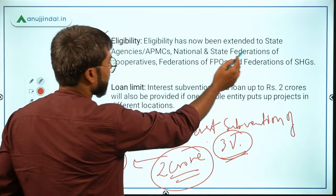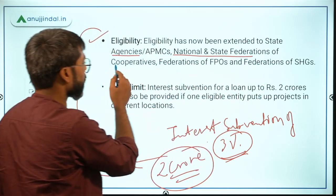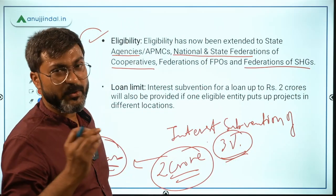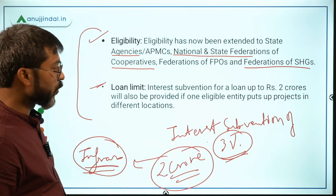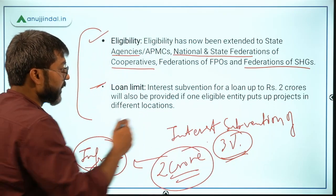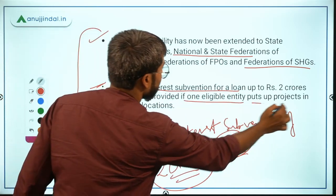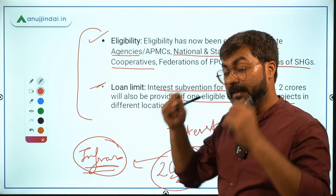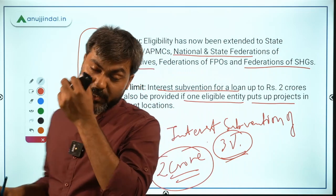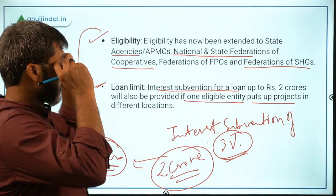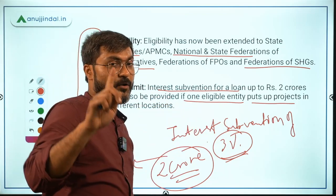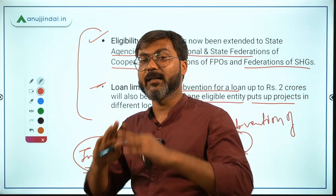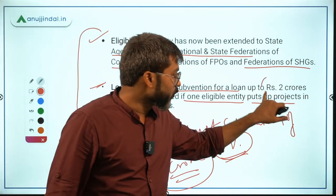Regarding modifications: eligibility has now been extended to state agencies, APMCs, national and state federations of cooperatives, federations of FPOs (Farmer Producer Organizations), and federations of Self-Help Groups — which were not included earlier. On the loan limit, it remains ₹2 crore, but the change is that interest subvention will now also be provided if one eligible entity puts up a project in different locations, whereas earlier the subvention was provided for only one location.